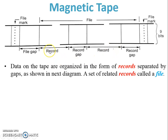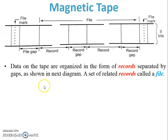Data on the tape are organized in the form of records. This is one record, this is a second record. If records are collected, it is called a file. A set of related records is called a file, and all such records are merged to create one file.